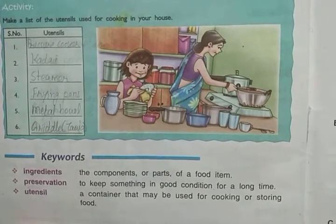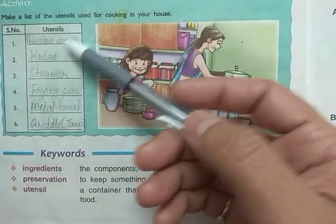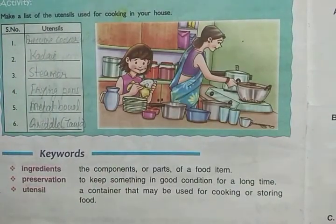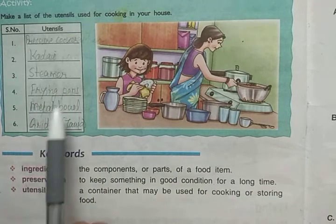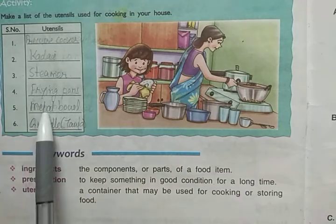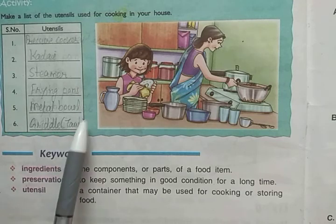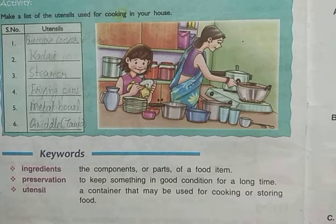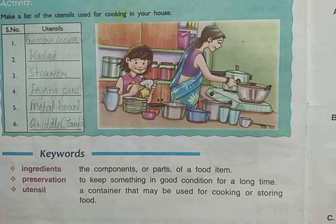Here are some utensils used for cooking in our houses: a pressure cooker is used for boiling; a kadai is used for frying; a steamer is used for the steaming method; a frying pan is also used; metal bowls for boiling and other purposes; and a griddle, that is a tawa, is used for cooking chapatis. These are the different types of utensils used for cooking in our houses.